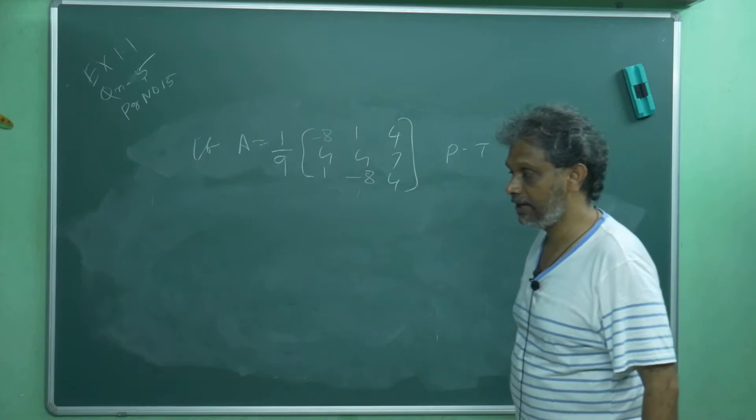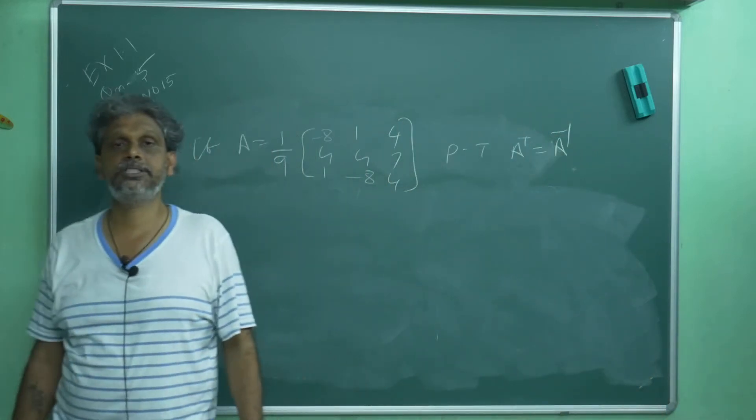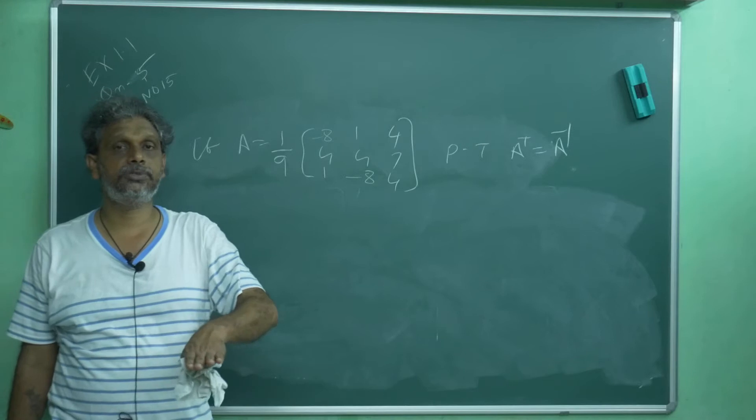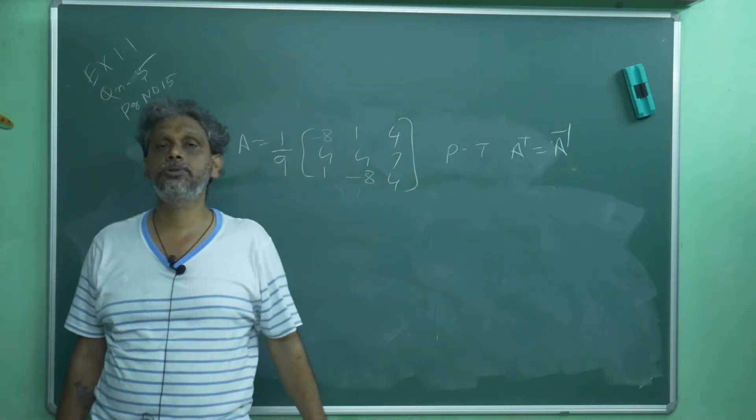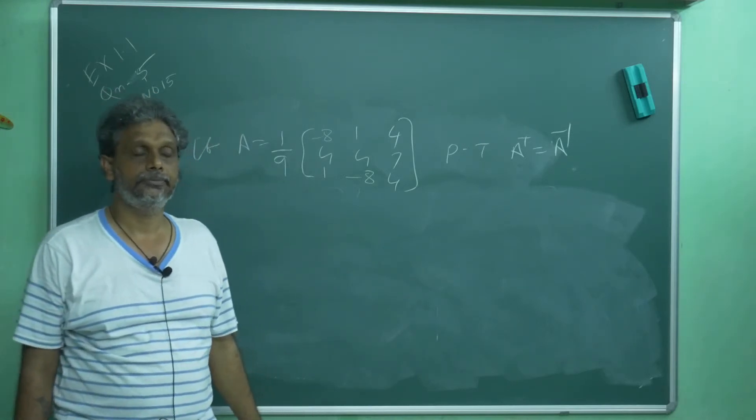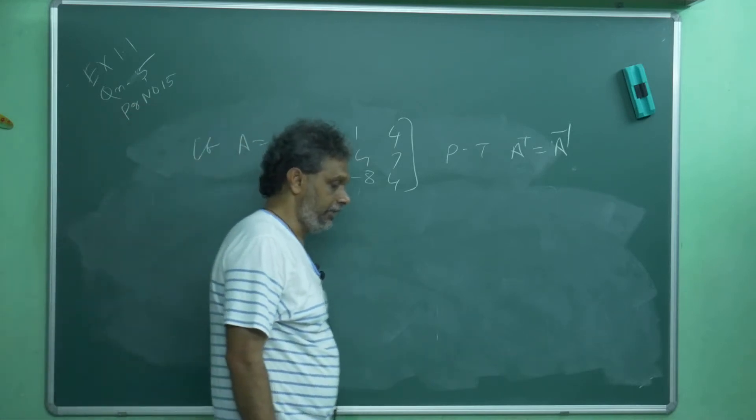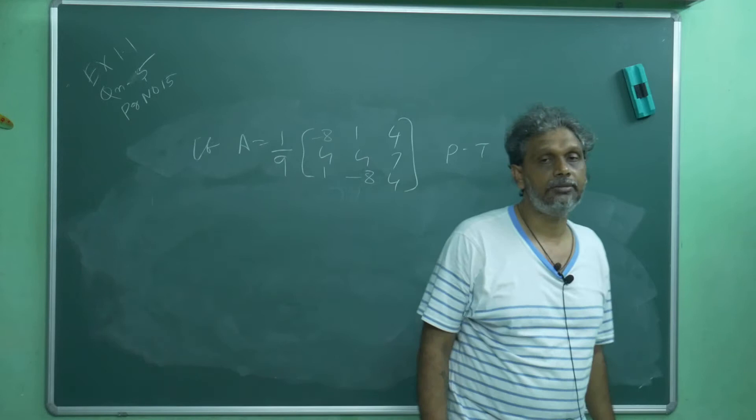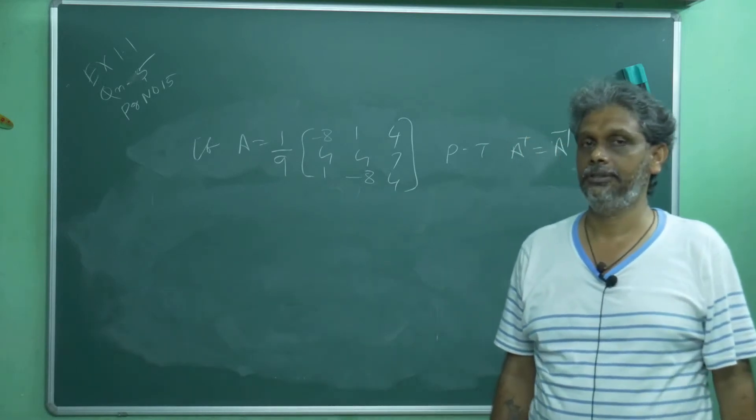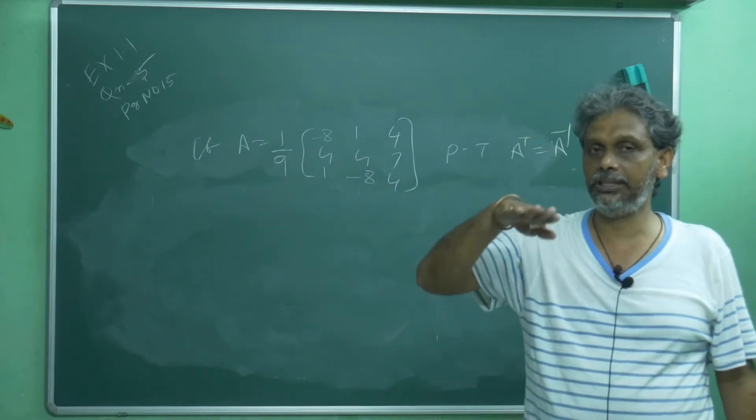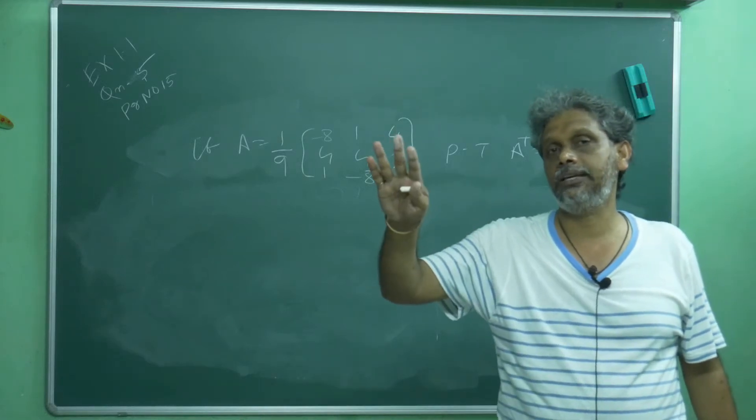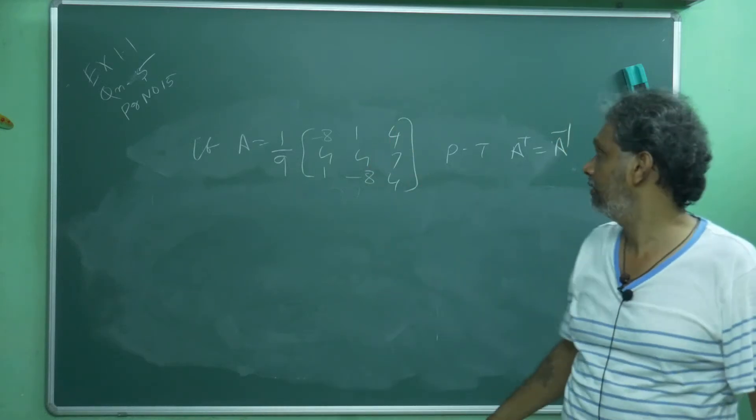If they ask prove that A transpose is equal to A inverse, it is enough to prove that A into A T is equal to I. There is one formula I will remember for next time. If any matrix is said to be orthogonal, A transpose itself is A inverse. If you are able to prove that A into A T is equal to I, your job is over.